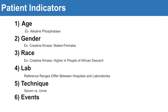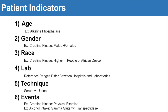The next factor involves events related to the patient — situational effects the patient may be undergoing prior to sample collection. These include physical exercise, which would actually increase creatine kinase, and alcohol intake, which would actually increase gamma-glutamyl transpeptidase levels. So always keep in mind what the patient was doing leading up to their sample collection, as these could also affect your readout.